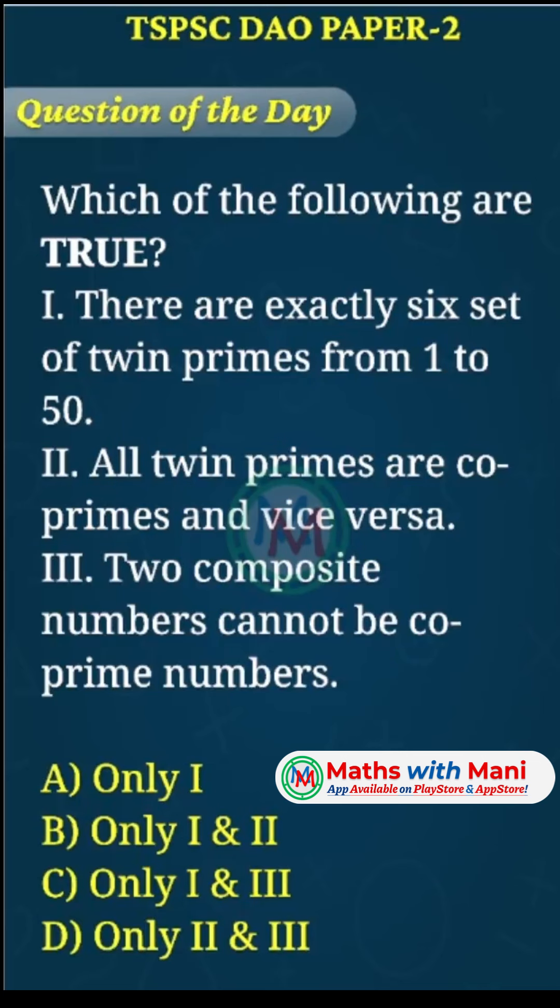Hi friends, welcome to the question of the day series. This is from the TSPSC DAO exam. The question asks which of the following statements are true. Statement 1: There are exactly six sets of twin primes from 1 to 50. Statement 2: All twin primes are co-primes and vice versa. Statement 3: Two composite numbers cannot be co-prime numbers. These are the options, so let's evaluate each statement.